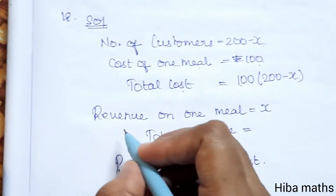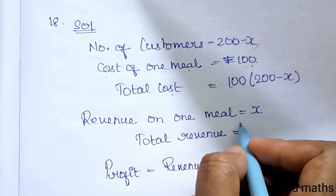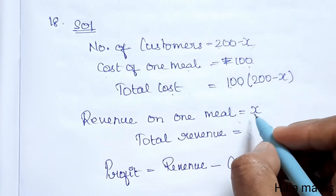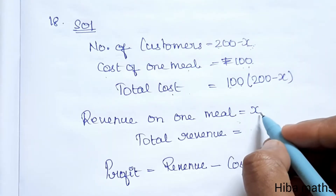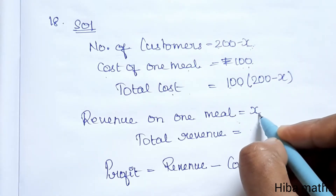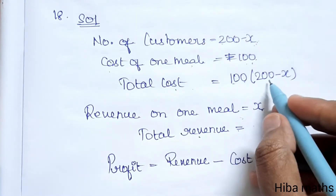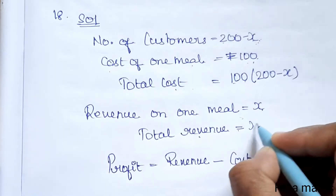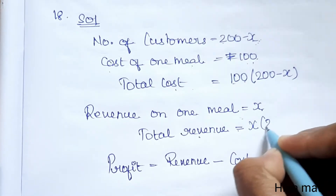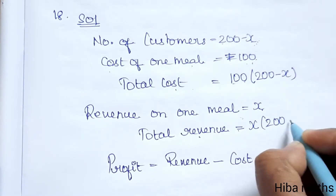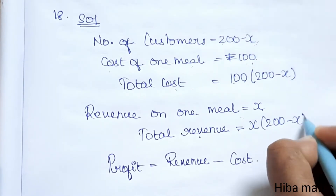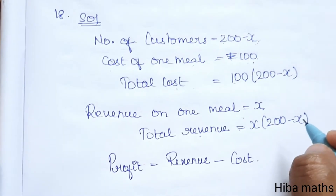Now for revenue: revenue on one meal is x rupees. So the total revenue is x into (200 minus x).